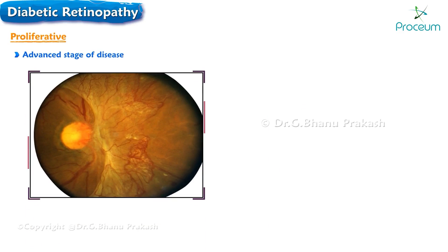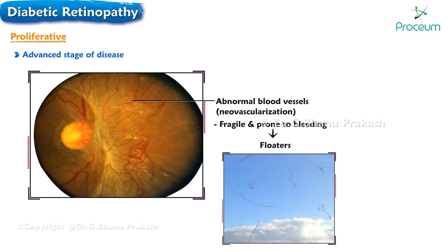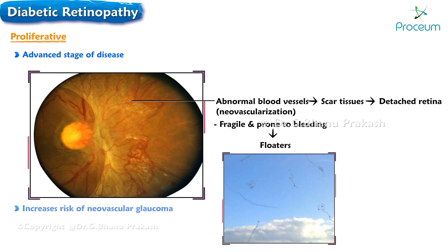Proliferative diabetic retinopathy represents an advanced stage of the disease characterized by the growth of abnormal blood vessels — neovascularization — in the retina. These newly formed vessels are fragile and prone to bleeding, leading to floaters in the field of vision. When scar tissue forms as a result of these abnormal vessels, it can cause retinal detachment, a serious condition requiring immediate medical attention. Proliferative diabetic retinopathy also increases the risk of developing neovascular glaucoma.